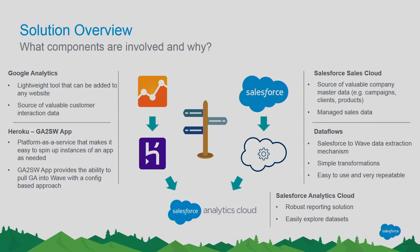So just a high-level overview of our solution. I talked about this in three components: our data source layer, integration layer, and reporting and dashboarding layer. At the top, we have our two data sources — Google Analytics and Salesforce. Google Analytics is a great lightweight tool you can add to any web app to bring in a lot of user data. On the other side, we have our Salesforce data. In the middle, we have our integration layer. We've built a Google Analytics to Salesforce Wave app on the Heroku platform. It's a one-click deploy, with a click-to-configure interface so you can easily determine what data points to bring from Google Analytics and push into your Wave instance. This is available for you to use today.